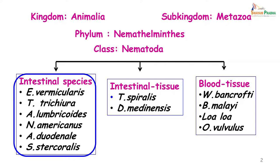In the nematoda class you have the intestinal species, the intestinal and tissue species, and the blood tissue species. Today we are going to be discussing the intestinal species in which we have Enterobius vermicularis, Trichuris trichiura, Ascaris lumbricoides, Necator americanus, Ankylostoma duodenale, and Strongyloides stercoralis.